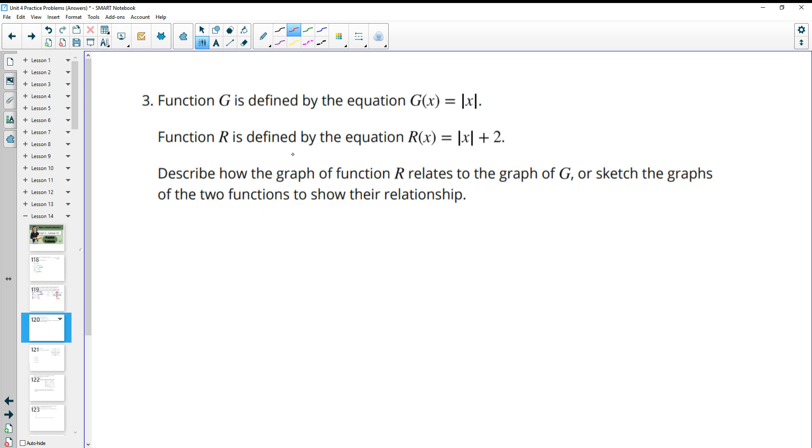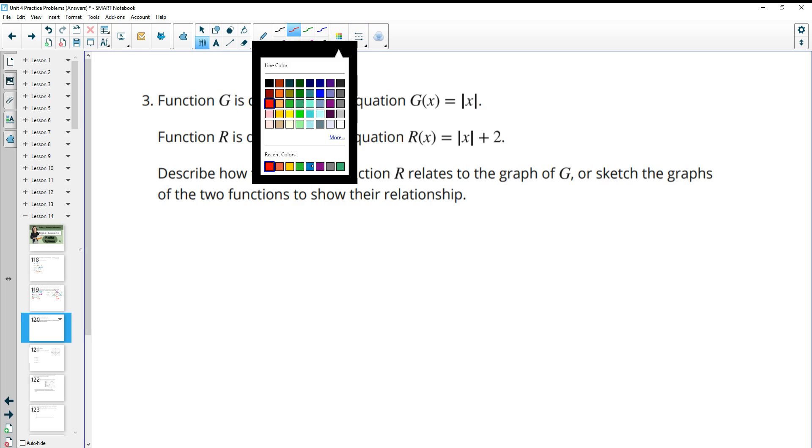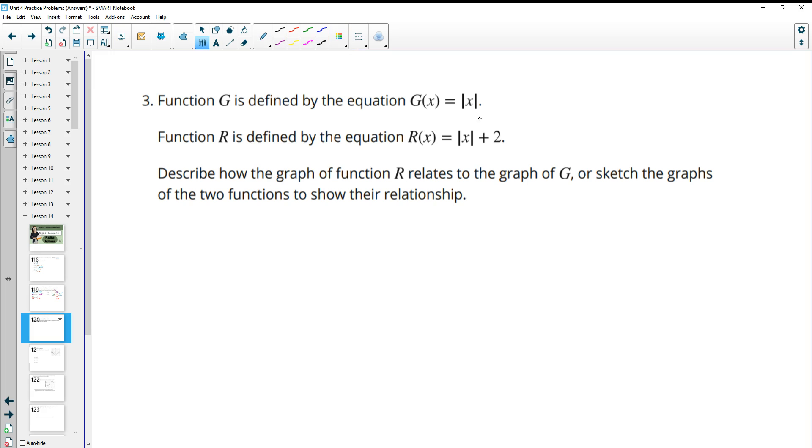Number 3, function g is defined by the equation g of x equals the absolute value of x. r is defined as r of x equals the absolute value of x plus 2. Describe how the graph of function r relates to g. So we see this plus 2 out here.